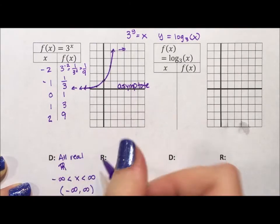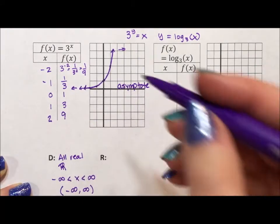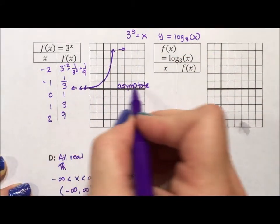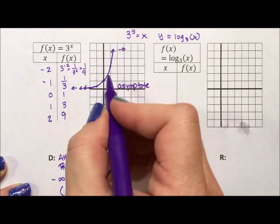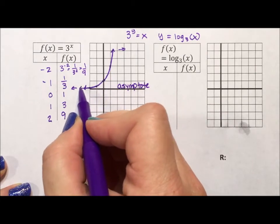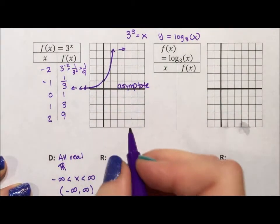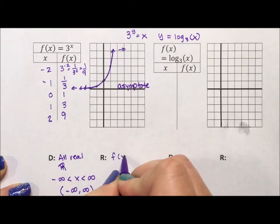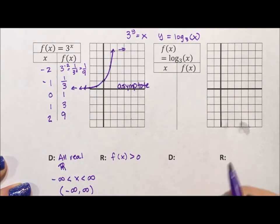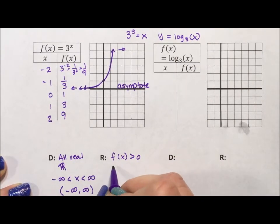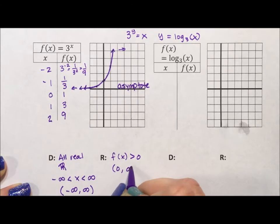The domain is all real because that's your x values. The range, we just said this is an asymptote, so this will never equal zero, but this will forever be getting closer and closer to zero. So our range is either f of x is greater than zero, or you can do interval notation, zero to infinity. I'm using parentheses here because we can't equal, the same as there's no equal sign there.